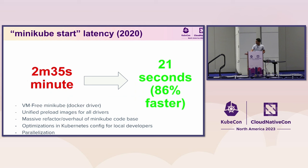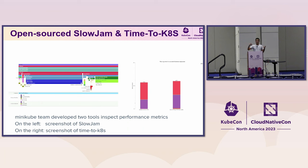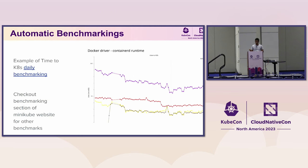We developed a tool called Time2Kates, going back to the principle of data-driven decisions. Time2Kates measures from zero to when your Kubernetes cluster is ready — when the API server is running, when etcd is running, when the cluster is ready for your app. Both Slowjam and Time2Kates are open source. We also set up automatic daily benchmarking on our website using these tools across different categories, so we always know if we're making Minikube better or worse over time.